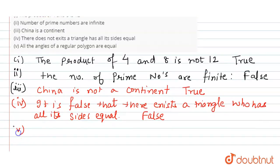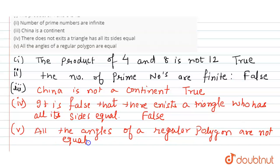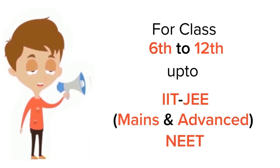The fifth part is: all the angles of a regular polygon are equal. So the negation will be: all the angles of a regular polygon are not equal. Let us check its validity — a regular polygon has all sides equal, and indeed all its angles are equal, so this negated statement is false.